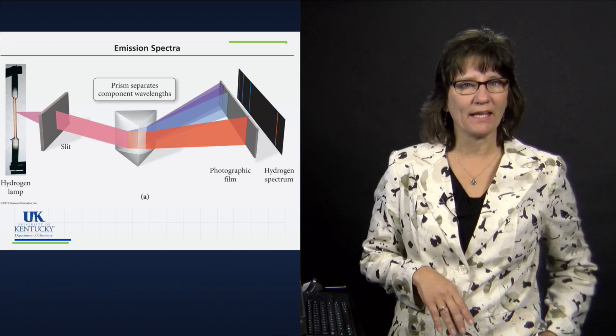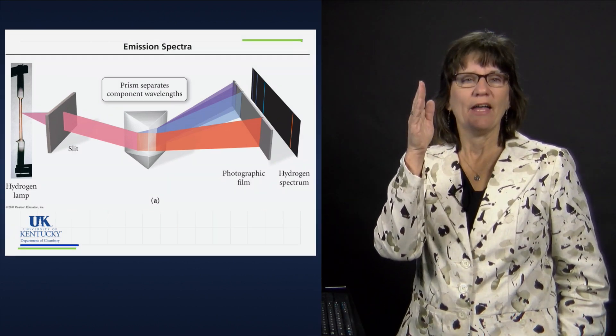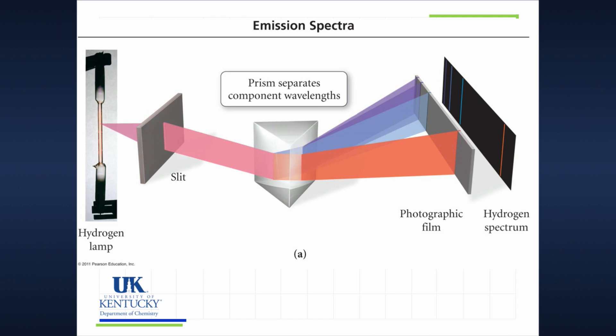So here's a schematic of it. We see a tube. That tube right there is a hydrogen lamp. What does that mean? It's got hydrogen gas inside that tube. They pass an electrical current through it until that glows.